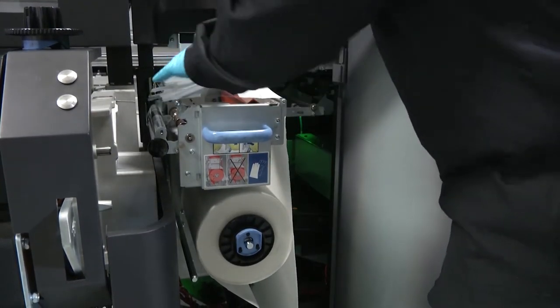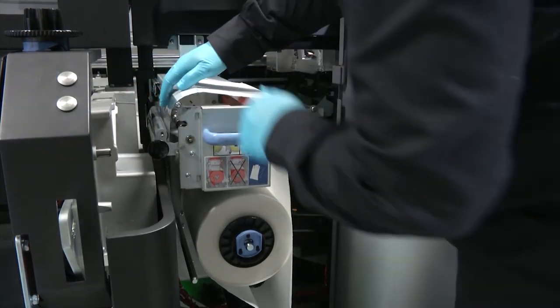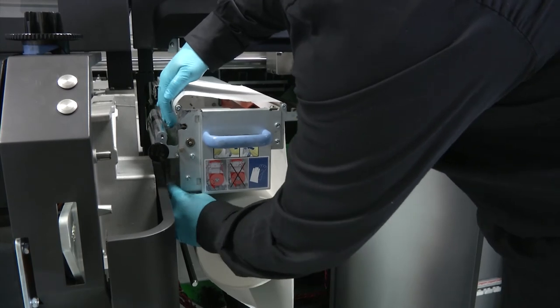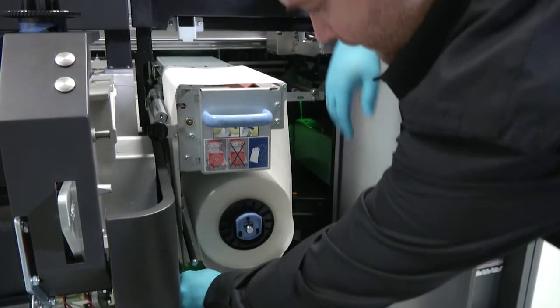Thread the leading edge of the roll up through the assembly over the upper rollers. Then, thread it through the pinch rollers.